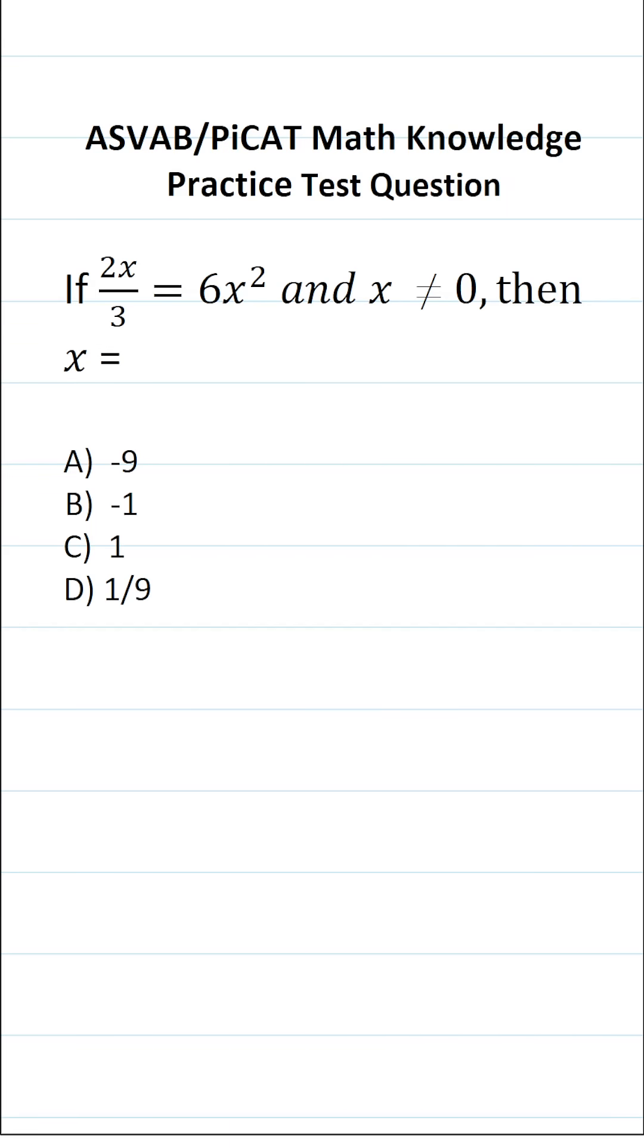This math knowledge practice test question for the ASVAB and PICAT says if 2x over 3 equals 6x squared and x does not equal zero, then x equals. So we're going to be solving the equation 2x over 3 equals 6x squared for x.